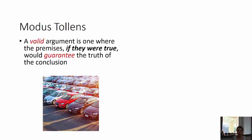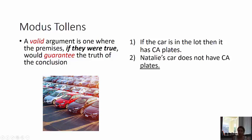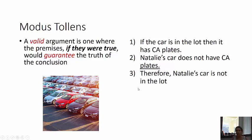A valid argument is one where the premises, if they were true, would guarantee the truth of the conclusion. Here's a modus tollens: if the car is in the lot, then it has California plates — meaning every car in the lot has California plates. Natalie's car does not have California plates. It guarantees that Natalie's car is not in the lot. If every car in the lot has California plates, and Natalie's car doesn't have California plates, then obviously Natalie's car cannot be in the lot. And there is modus tollens.